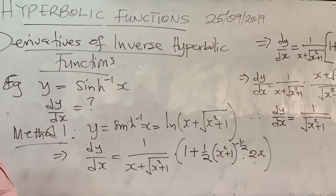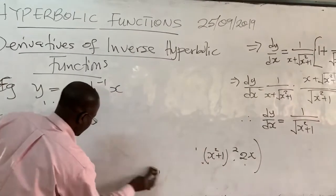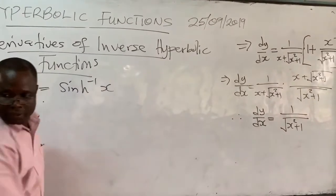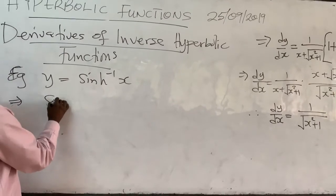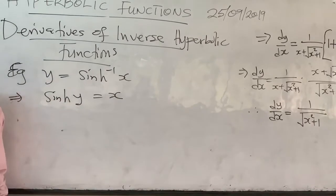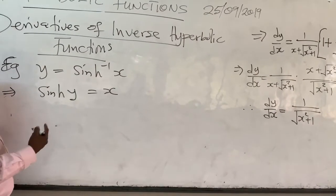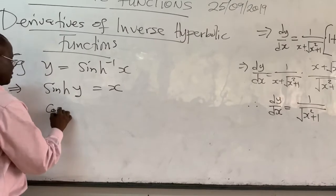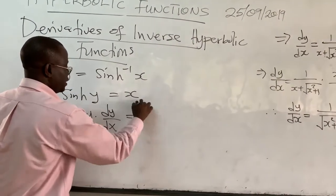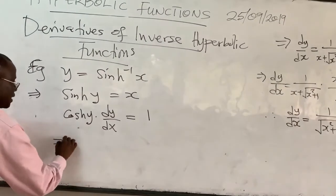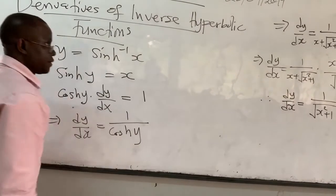Now there is a second approach, which is shorter. Given that y equals sinh⁻¹(x), this implies that sinh(y) equals x. Then just differentiate both sides. We know the derivative of the hyperbolic sine is cosh, so that gives us cosh(y) times dy/dx, using implicit differentiation, equals 1. This implies that dy/dx equals 1 over cosh(y).